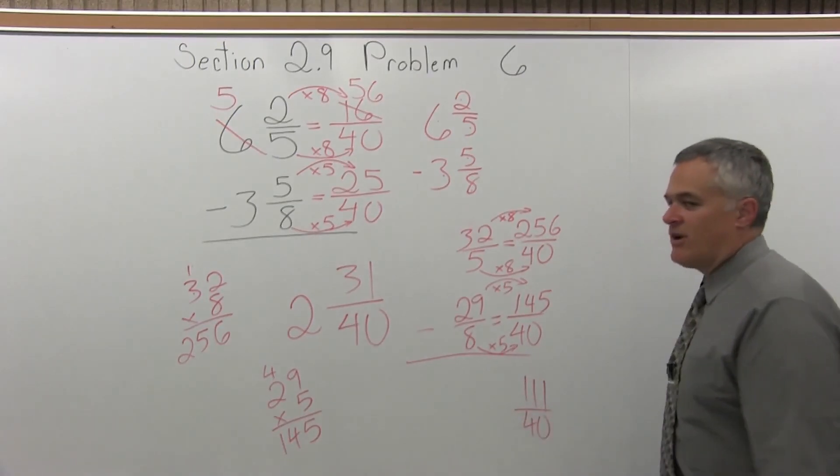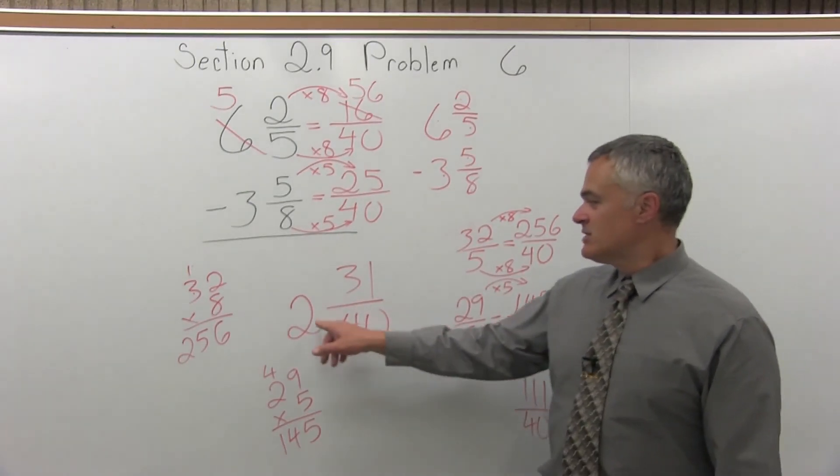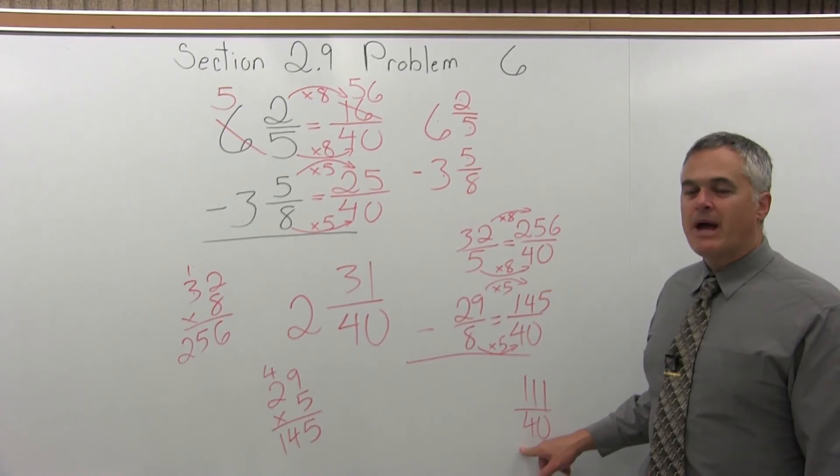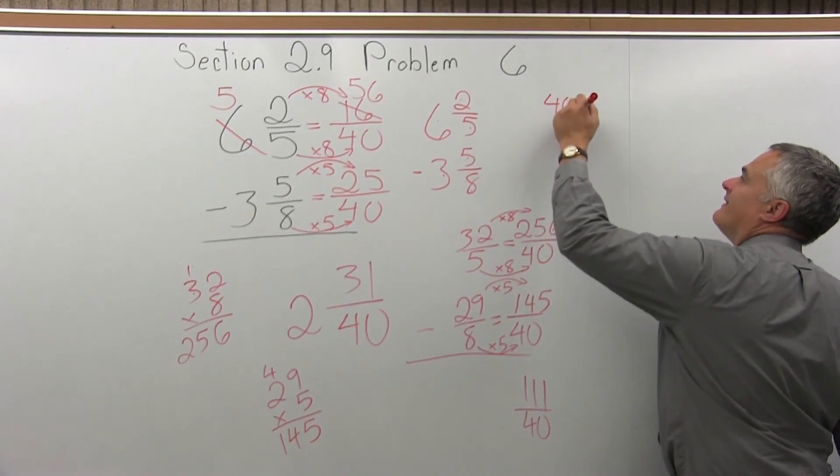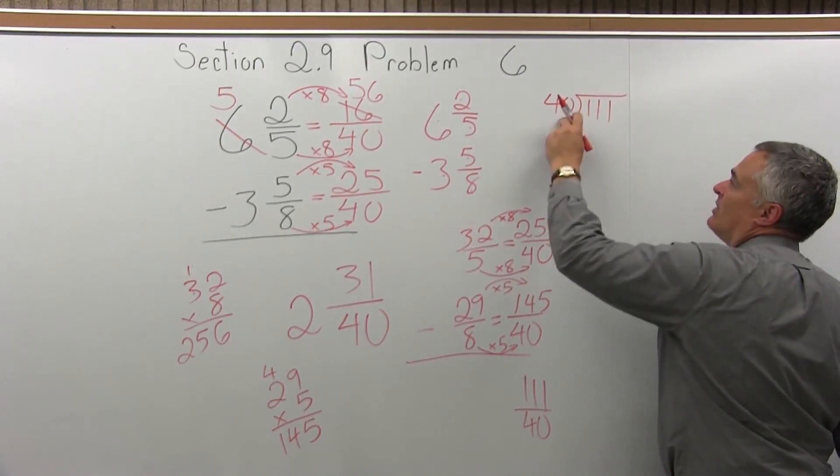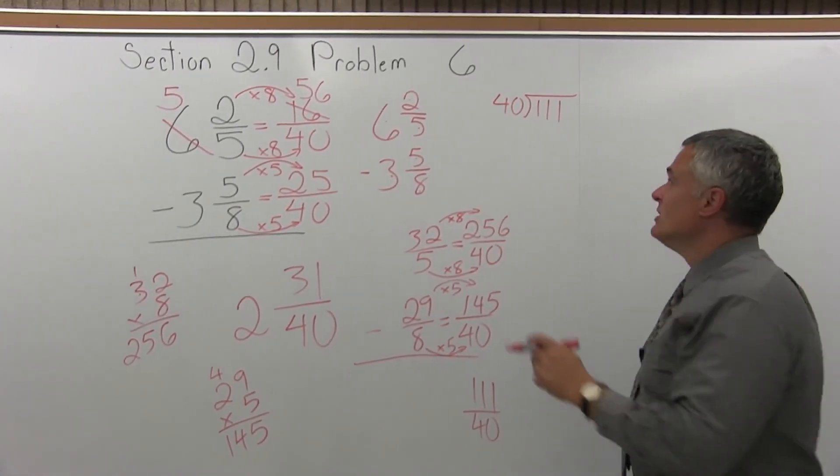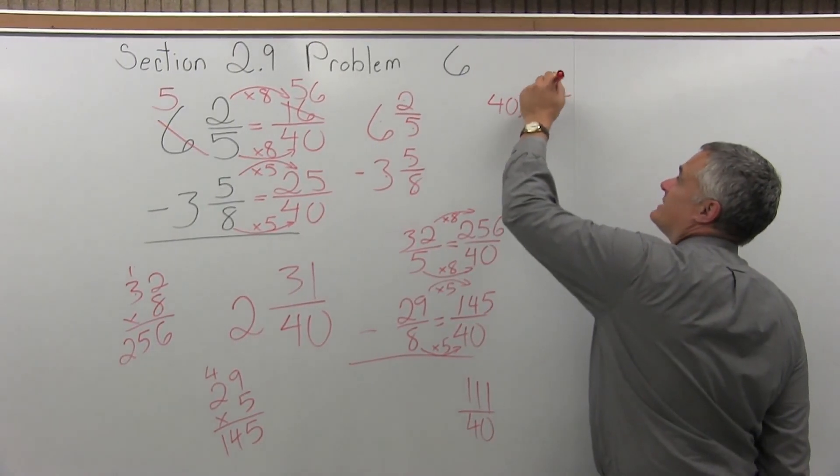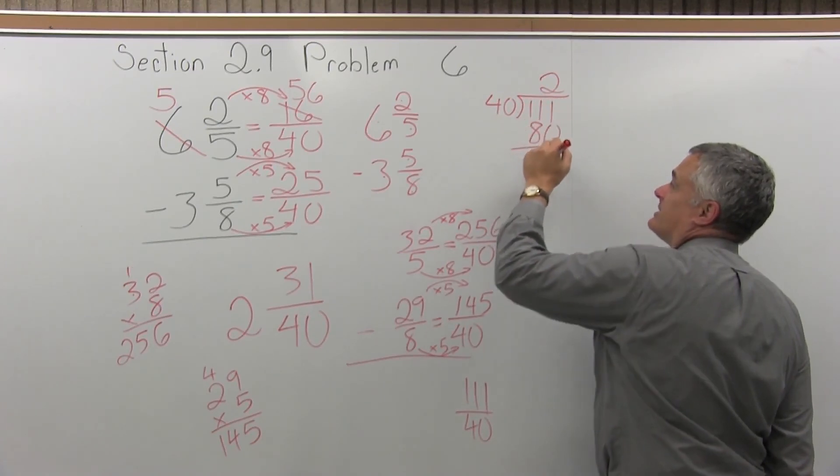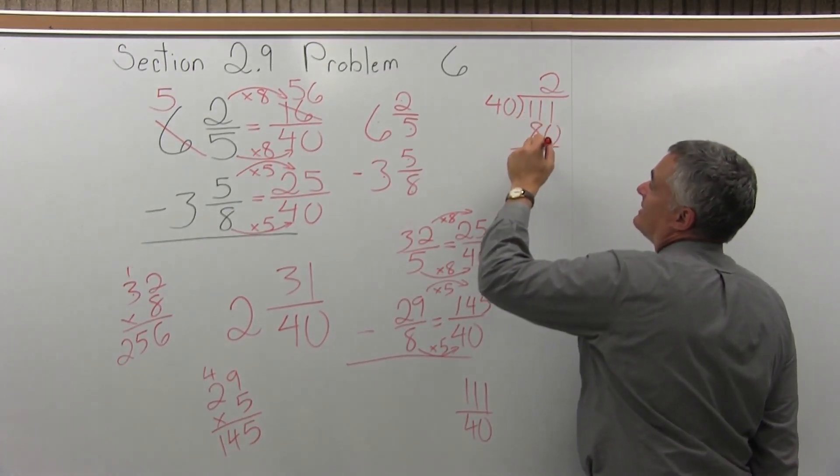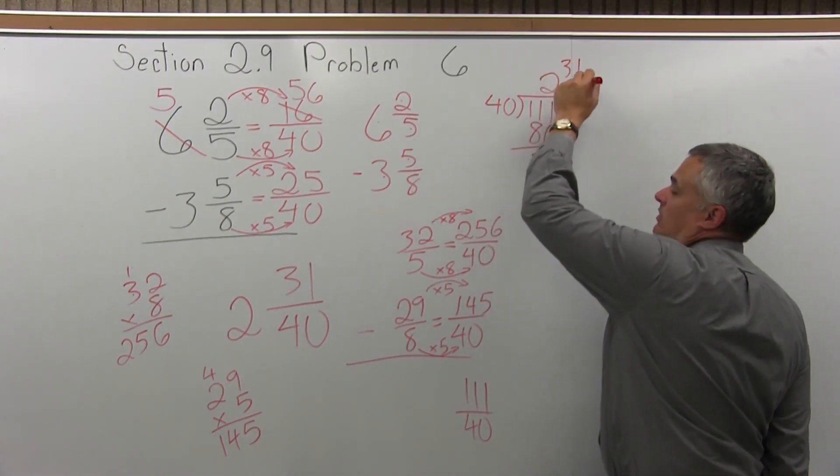Now that looks different than our previous answer, 2 and 31 fortieths. Let's put that back to a mixed number. So, let's do the denominator of 40 divides into the numerator how many times? Well, 1 times 40 is 40, 2 times 40 is 80, 3 times 40 is 120. 3 times 40 is too big. So 2 times 40 is as big as I can get. 2 times 40 is 80. Now subtract 111 minus 80. 1 minus 0 is 1, 11 minus 8 is 3, so it's 2 and 31 over 40.